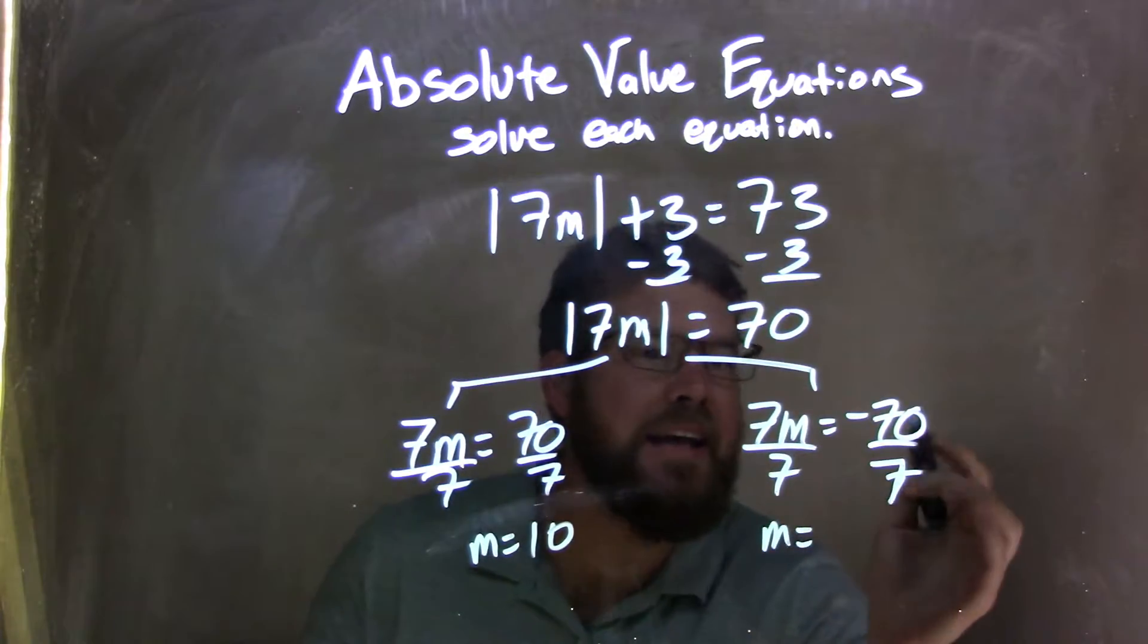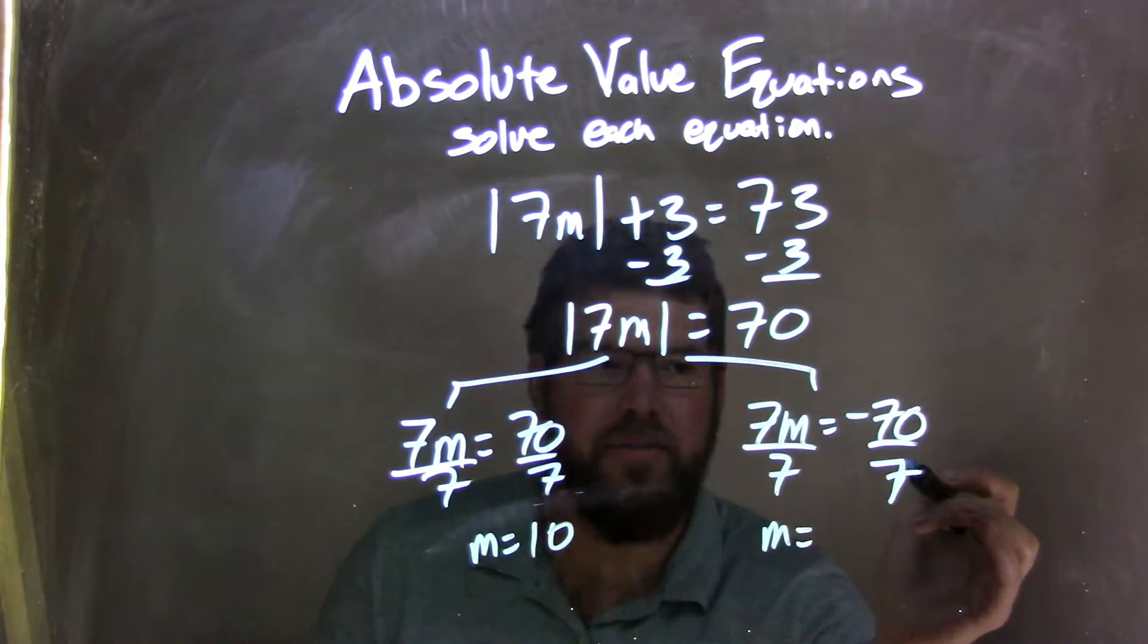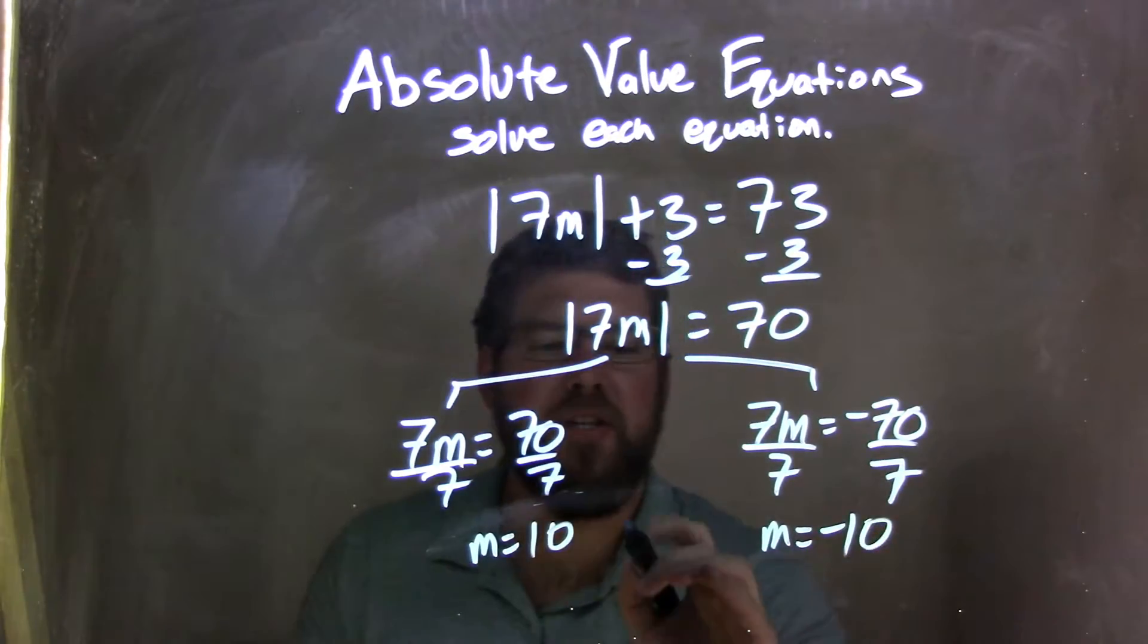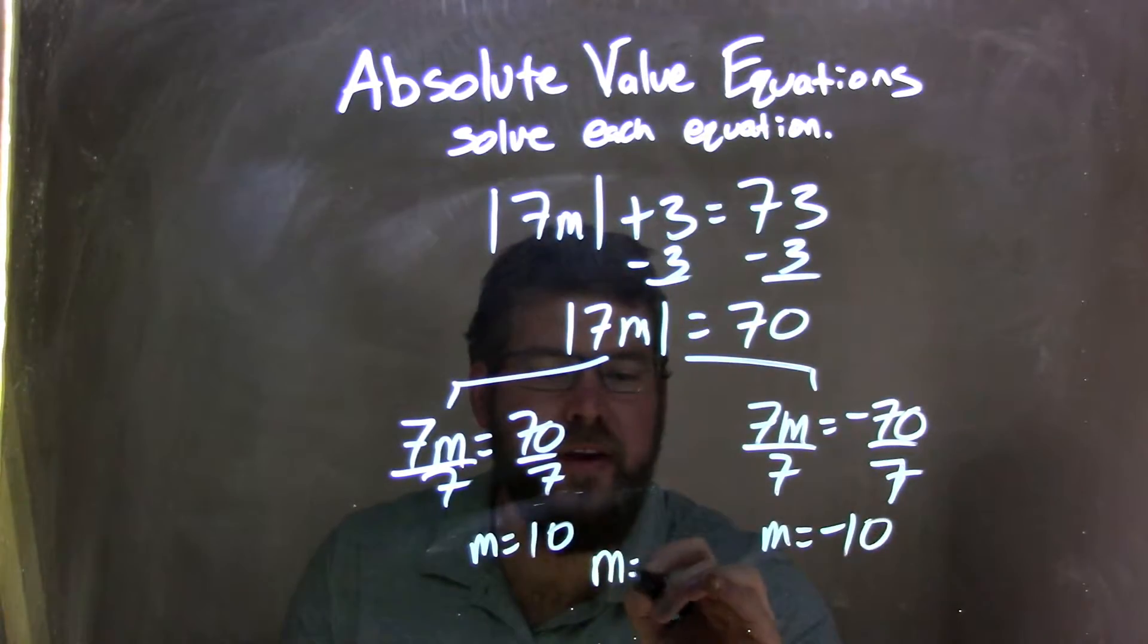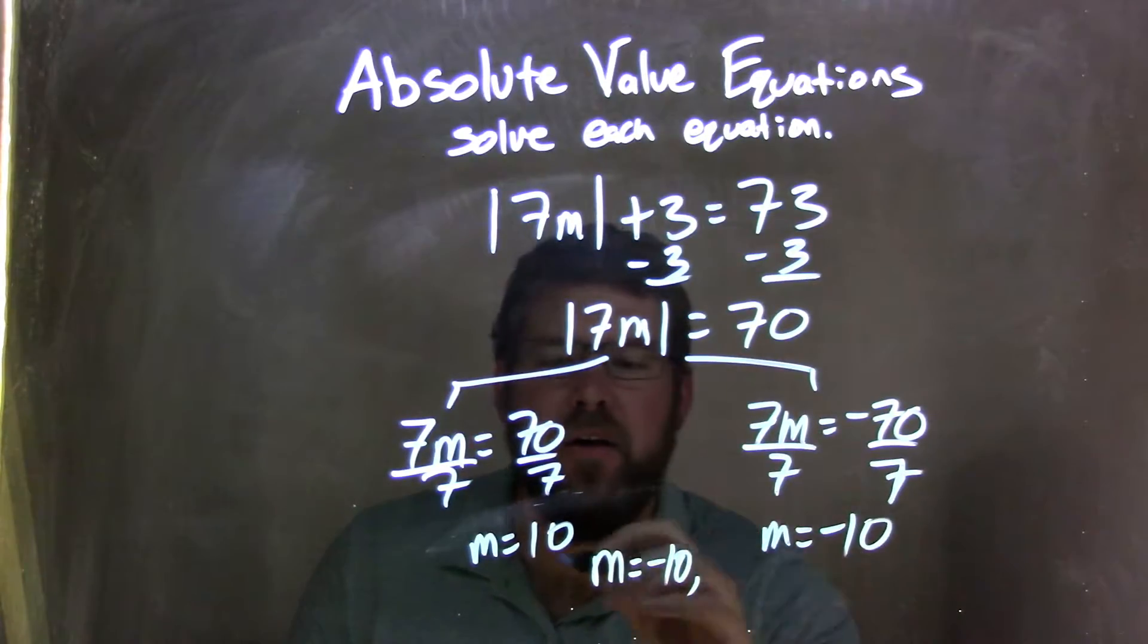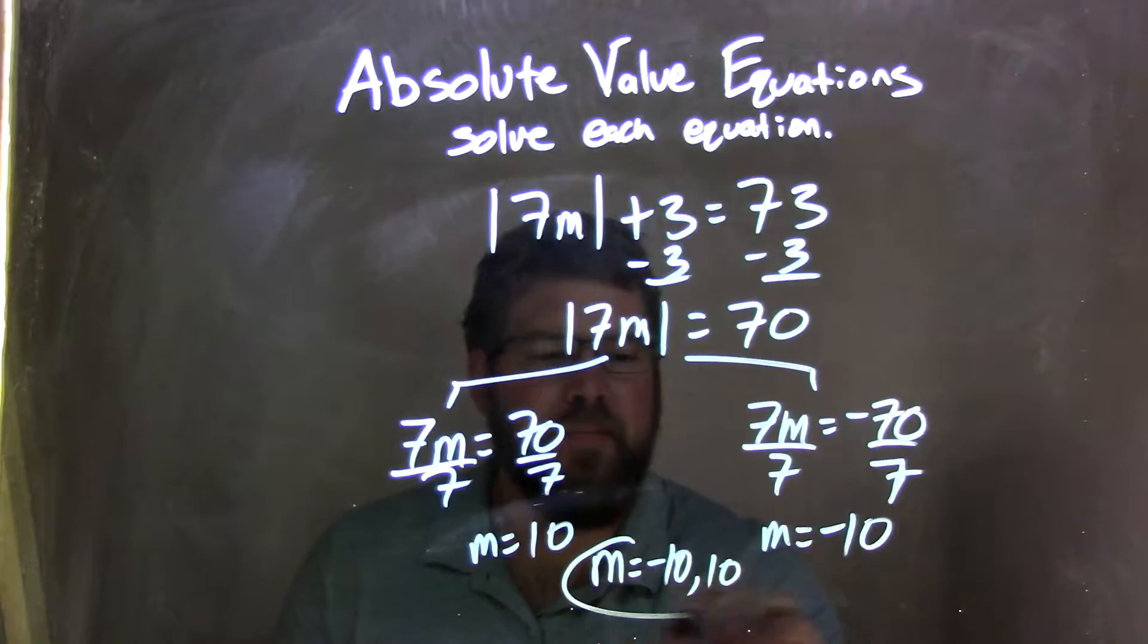And m equals negative 70 divided by positive 7. Negative divided by positive is negative, so we have negative 10. And so my two answers, to make it look nice and neat, is negative 10, lower number first, and positive 10.